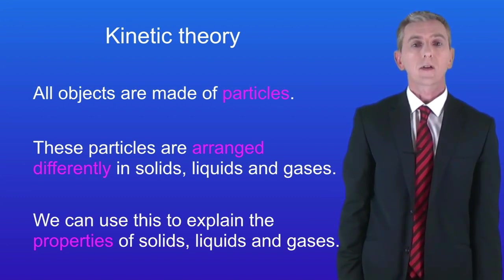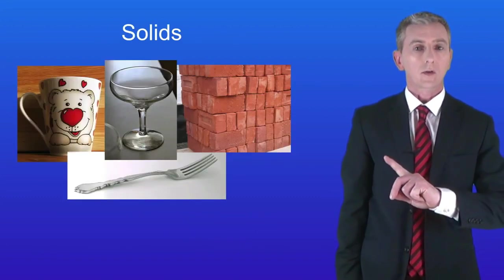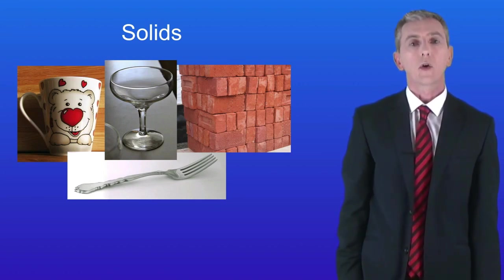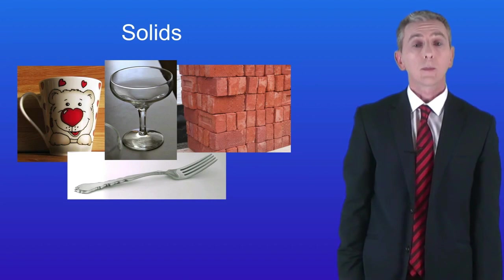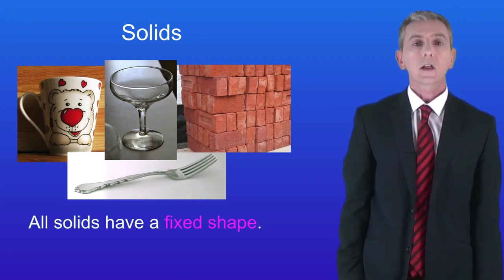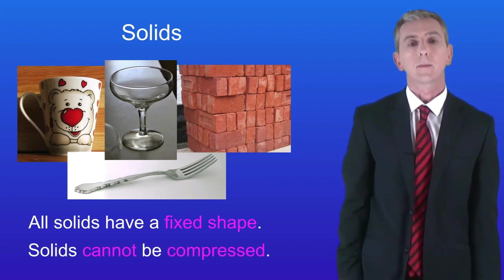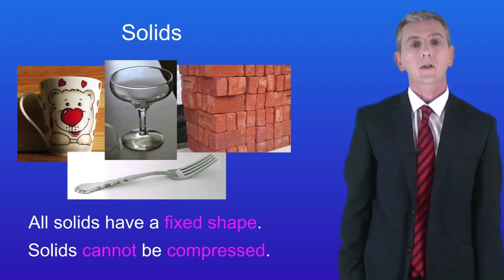We're going to start by looking at the properties of solids. Here are some solids: a coffee mug, a wine glass, some bricks and a fork. Solids have two important properties which you have to learn. Firstly, all solids have a fixed shape which does not change. Secondly, solids cannot be compressed if we squeeze them. So let's take a look at how the particles are arranged in solids and see if we can explain these properties.